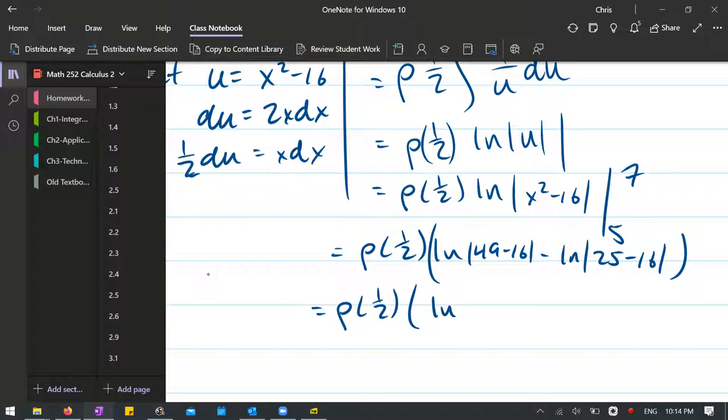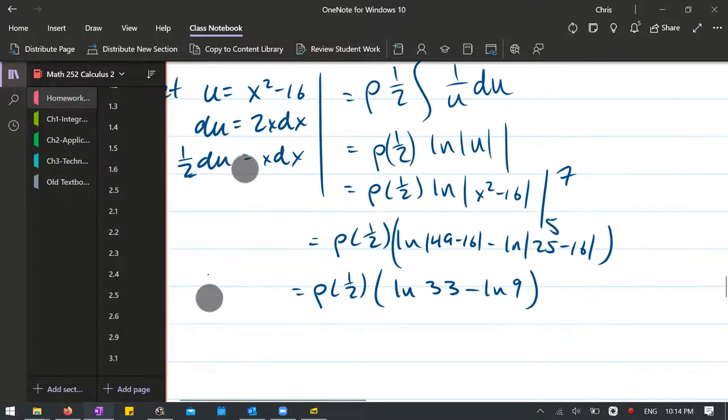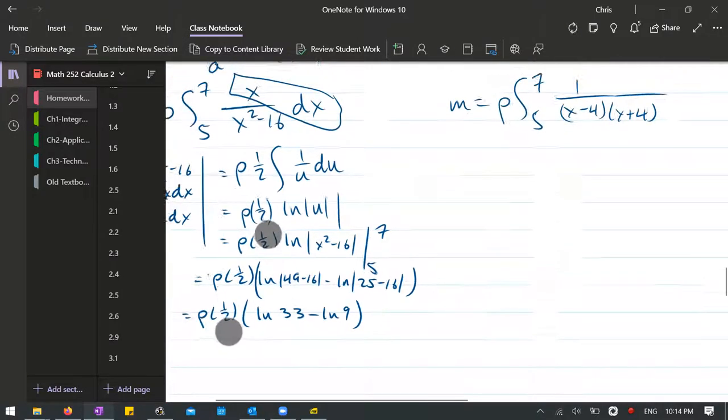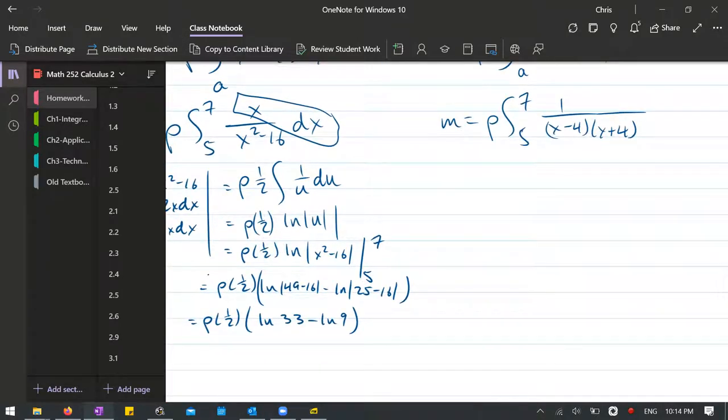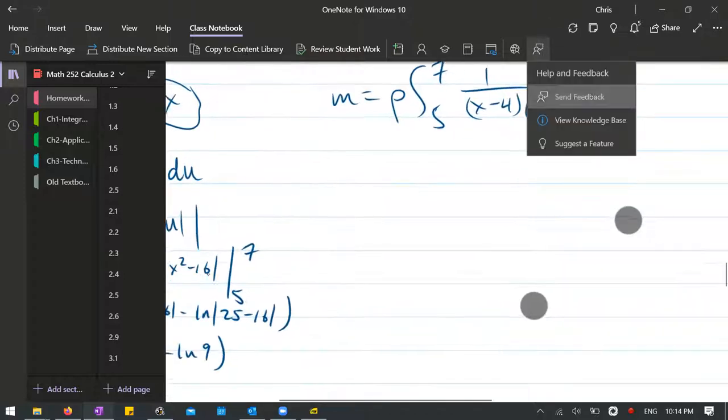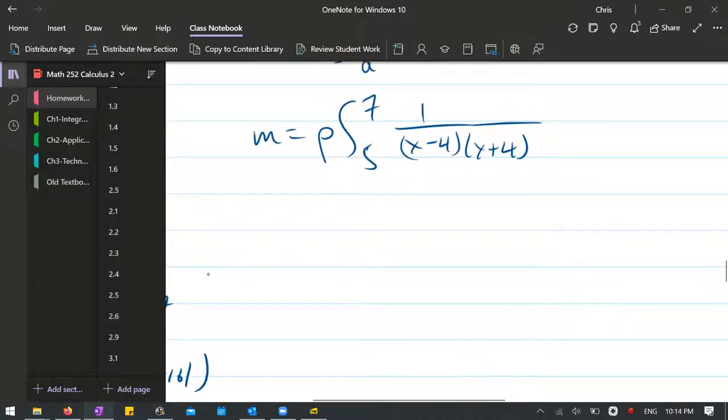So we have ln of 7 squared is 49 minus 16, minus ln 25 minus 16. These aren't going to get much better. 49 minus 16 is 33. Minus ln 25 minus 16 is 9. So that's as good as it's going to get here. Your problem might be a little different. You may actually have to go partial fractions. So yours might be more similar to what we're about to do over here. So I'll go and finish the partial fractions on this side.